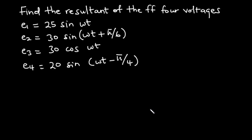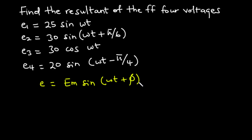So to solve this problem, we are going to convert the voltages from the time domain to the phasor domain. Now under the phasor domain, we are interested in only two quantities. First of all, we are interested in the amplitude and then the phase angle. Now we all know that the standard sinusoidal waveform is given by the equation E equals Em sine omega t plus phi. And from this equation, we know that Em is the amplitude, and then phi is the phase angle.